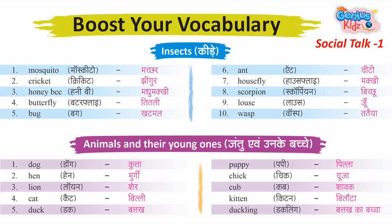2. Hen – Murgi. Young: Chick – Chooja. 3. Lion – Sher. Young: Cub – Shavak. 4. Cat – Billi. Young: Kitten – Billota.